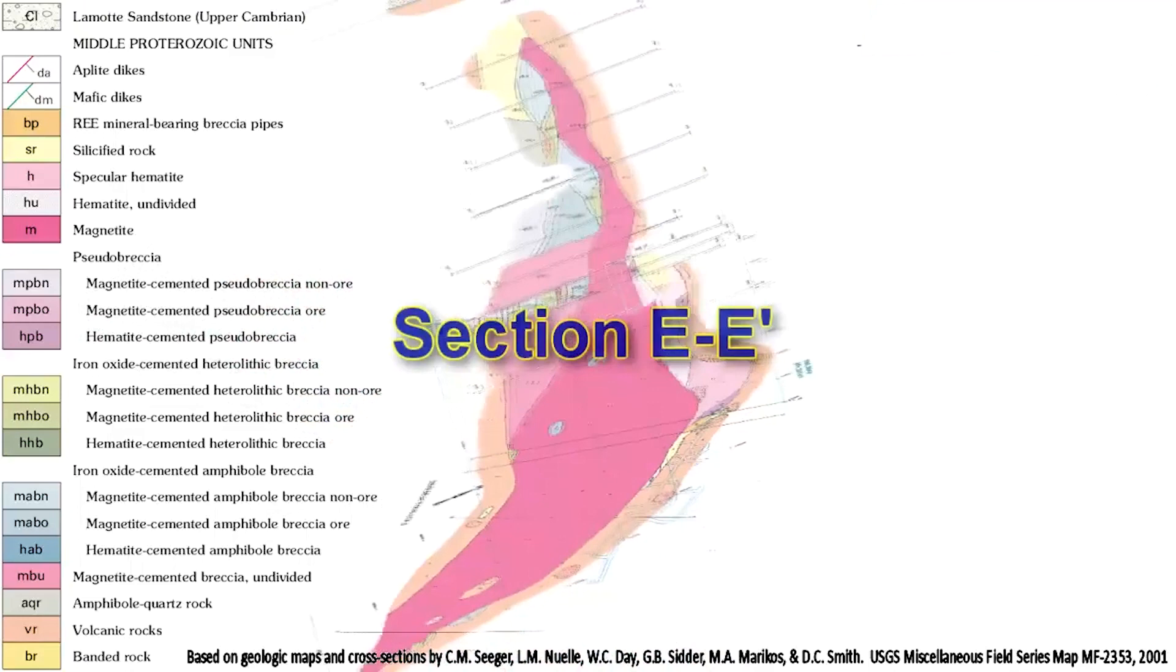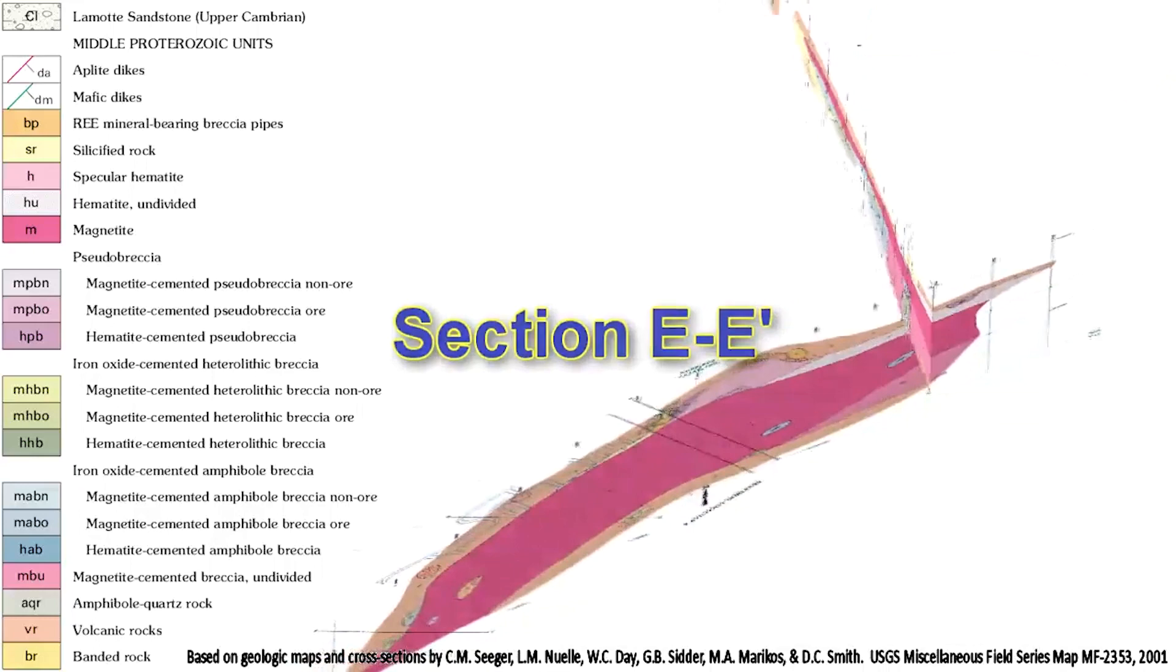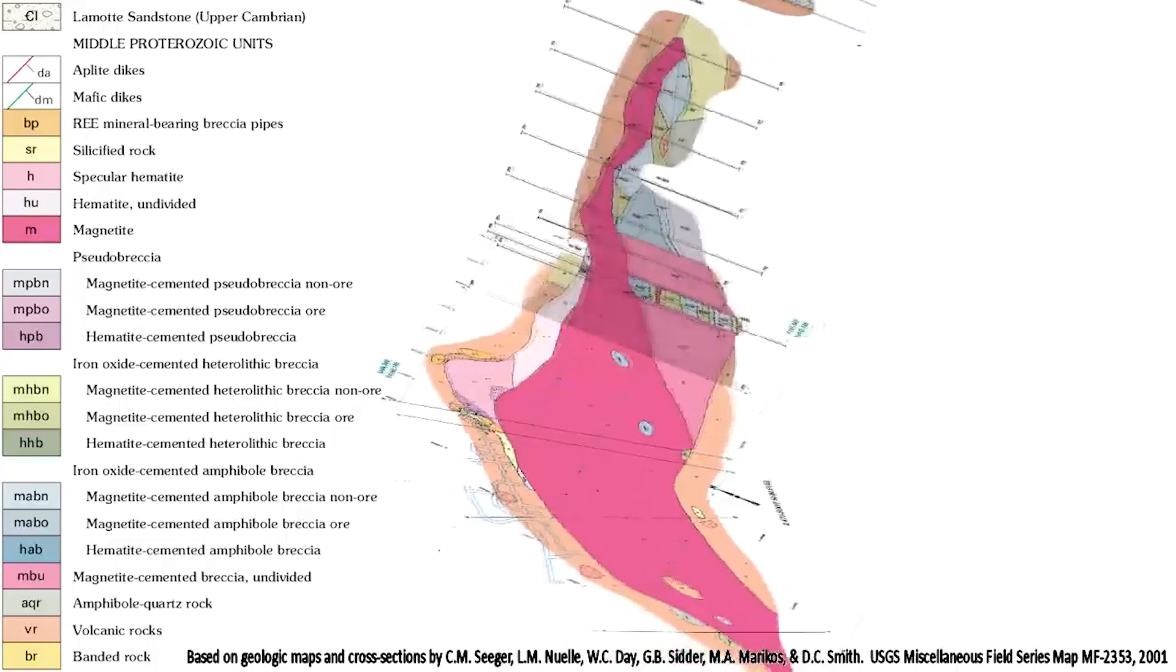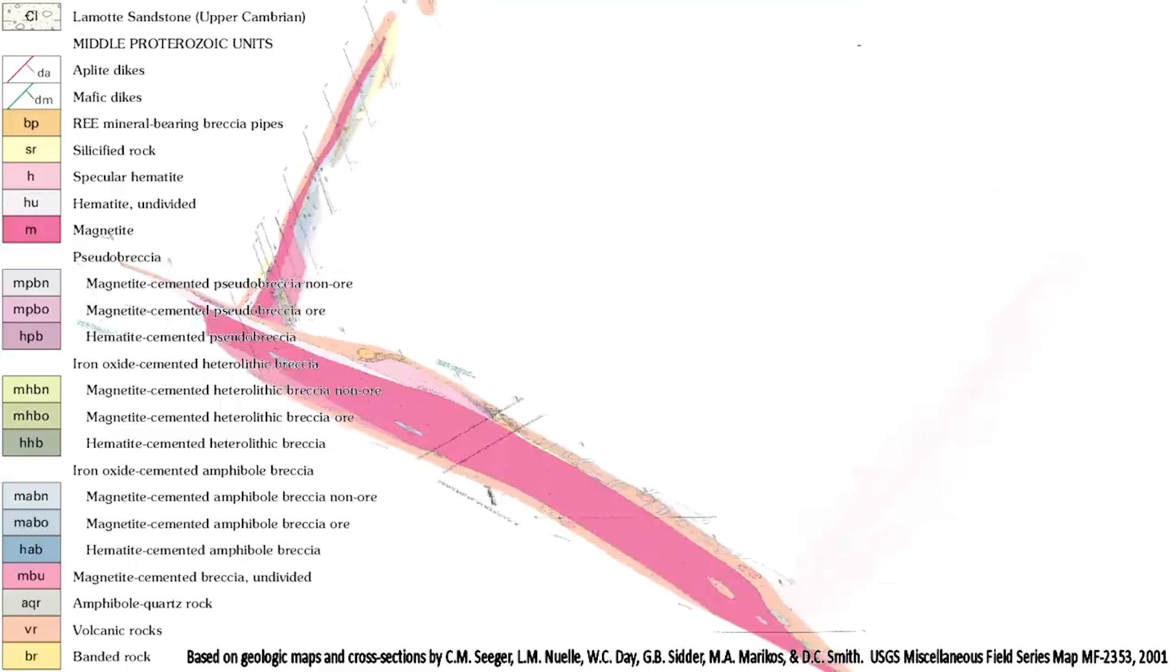The iron ore deposit is contained within a breccia at the center of a collapsed Precambrian caldera. Ore grades run as high as 70% magnetic iron with 250 million tons of proven iron ore reserves. The deposit is open at depth.